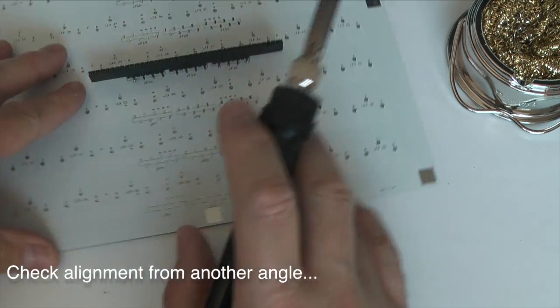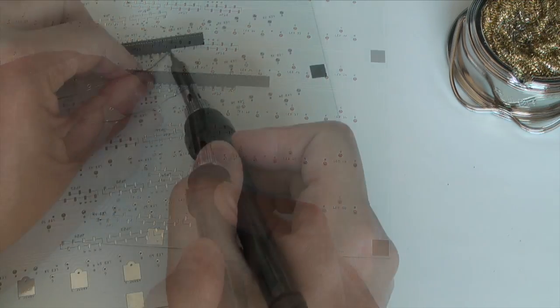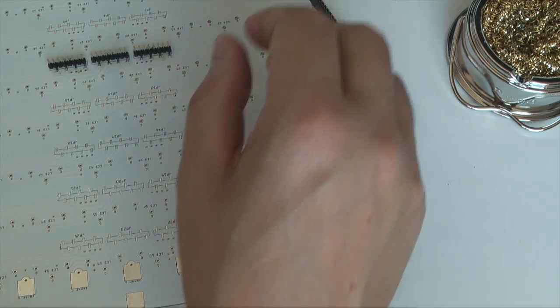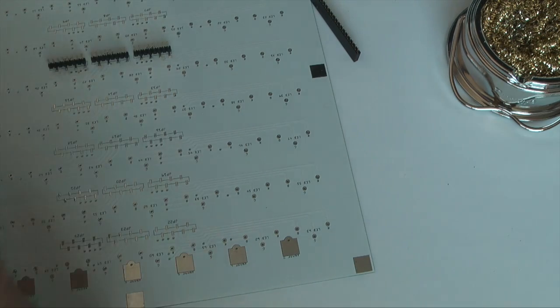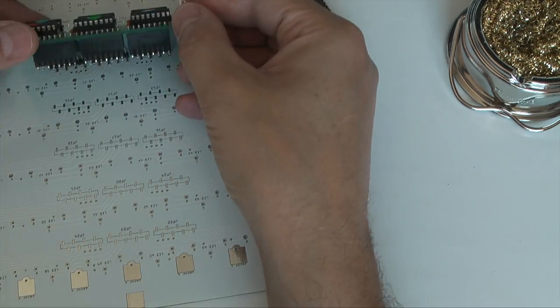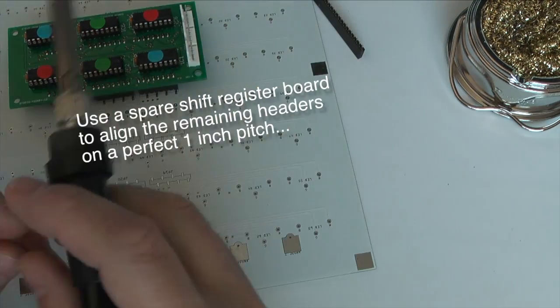I placed the first row of headers on the center of the board and then worked outwards to try and eliminate as many alignment errors as possible from one side to the other. I then used my spare shift register board to place the remaining headers on a perfect one inch spacing.